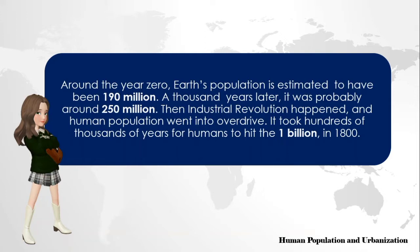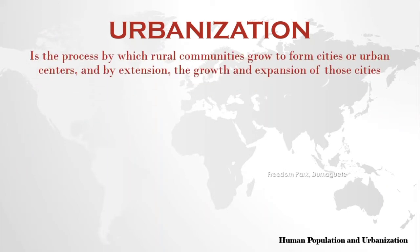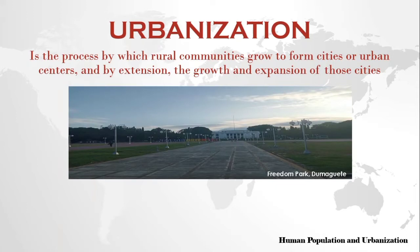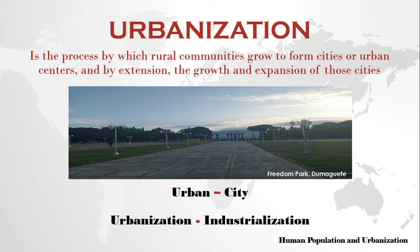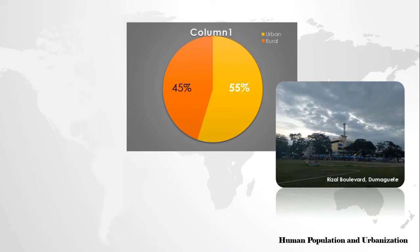Before we talk more about the human population, let's discuss first what is urbanization. Urbanization is the process by which rural communities grow to form cities or urban centers, and by extension, the growth and expansion of those cities. Urbanization refers to the population shift from rural to urban areas, the corresponding decrease in the proportion of people living in rural areas, and the ways in which societies adapt to this change. Urban means city, and urbanization means industrialization. Urbanization is the process through which cities grow and higher percentages of the population come to live in the city. Today, some 55% of the world's population, or 4.2 billion inhabitants, live in cities, and some 45% live in rural areas.